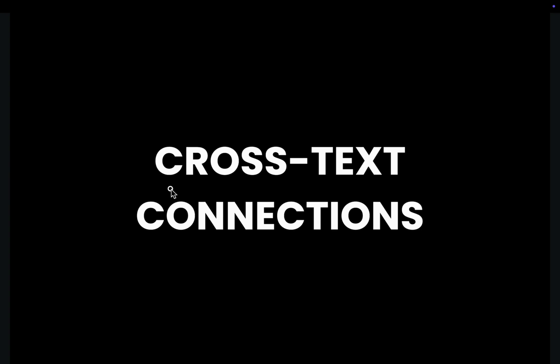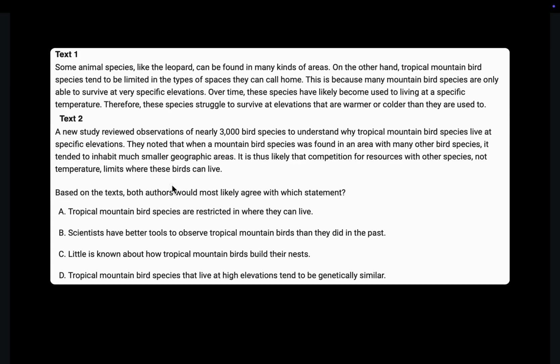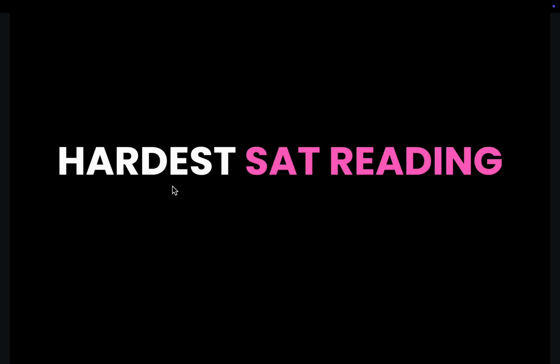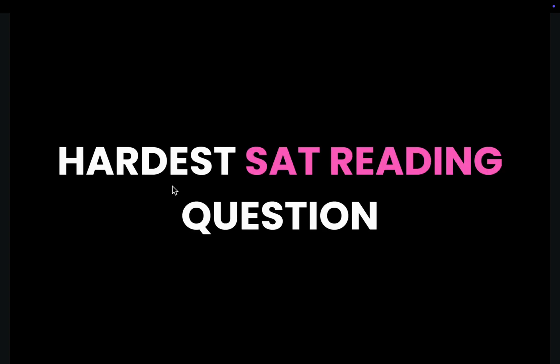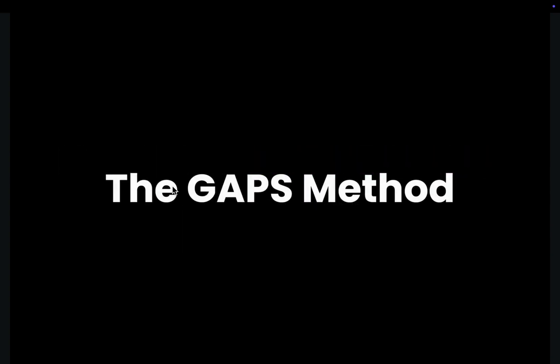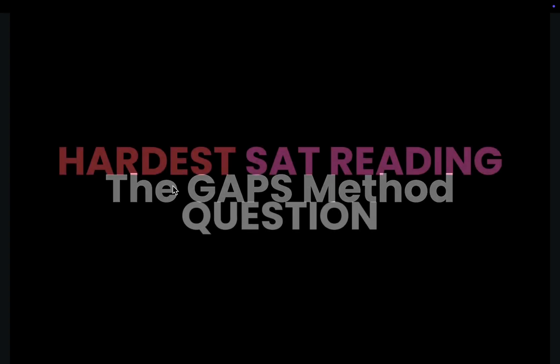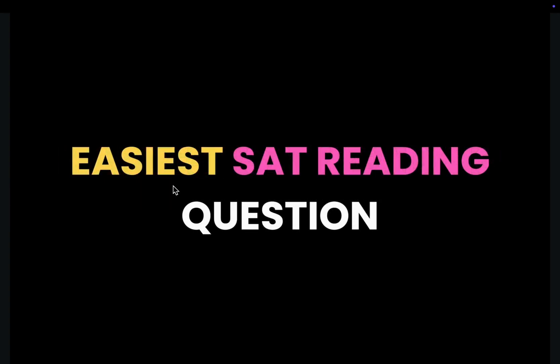Cross-text questions — the Text 1 and Text 2 questions — are some of the hardest and most annoying questions on the SAT reading section, but with the right strategy, they can actually become some of the easiest.